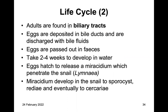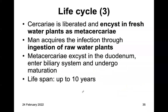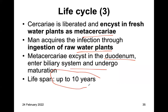The adults of Fasciola hepatica are found in biliary tracts, and eggs are deposited in bile ducts and discharged with bile fluids. Eggs are passed in feces and take two to four weeks to develop in water, then hatch to develop miracidium. The miracidium penetrates the snail — Lymnaea — developing into sporocysts, rediae, and eventually cercariae. The cercariae encyst in freshwater plants as metacercariae. Man acquires infection through ingestion of raw water plants. Metacercariae excyst in the duodenum, enter the biliary system, and undergo maturation. The lifespan in humans can be up to 10 years, compared to Opisthorchis and Clonorchis, which can be up to 25 years.